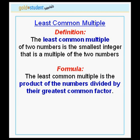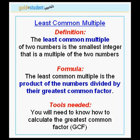The formula for calculating the least common multiple is to take the product of the numbers and divide by their greatest common factor. You will need to know how to calculate the greatest common factor in order to calculate the least common multiple.